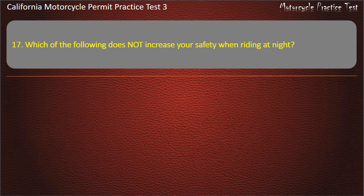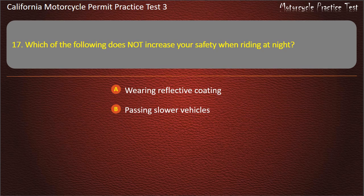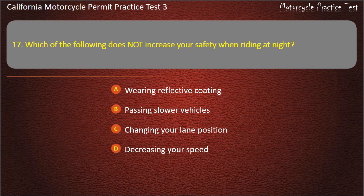Question 17. Which of the following does not increase your safety when riding at night? Wearing reflective coating, passing slower vehicles, changing your lane position, or decreasing your speed. Answer: Passing slower vehicles.